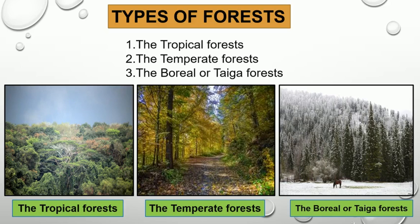Second is temperate forest. The temperate forests are regions where the climate changes a lot from summer to winter. The temperate forests are almost always made up of two types of trees: the deciduous trees and evergreen trees. Deciduous trees are trees that lose their leaves in winter, and evergreen trees keep their leaves all year.